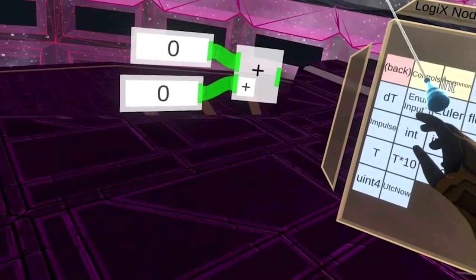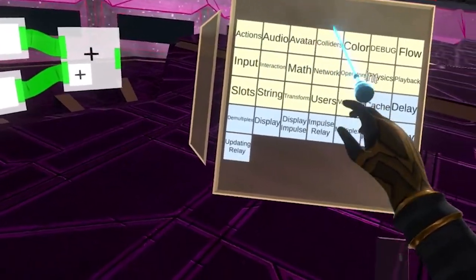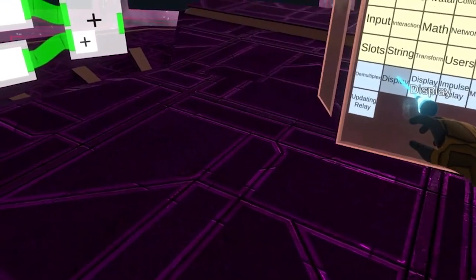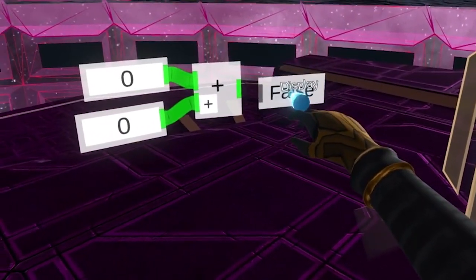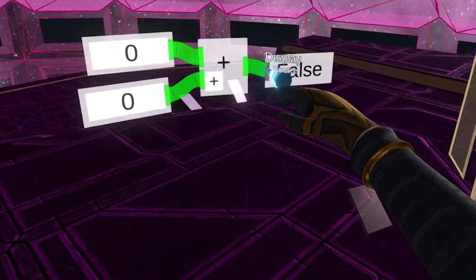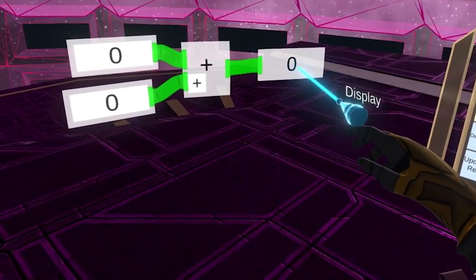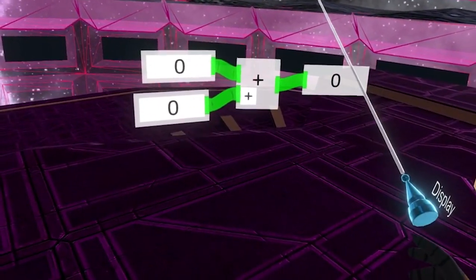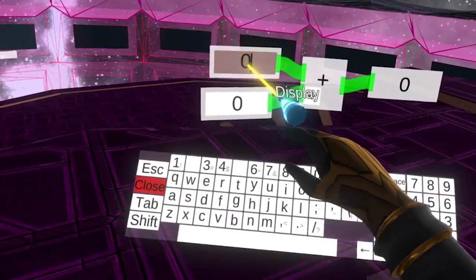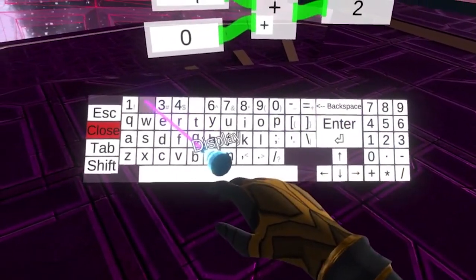From here we need a display node to see the results of our changes, so I'll add that in as well. With that set up, if we change these numbers around, the display will show us what the answer is.